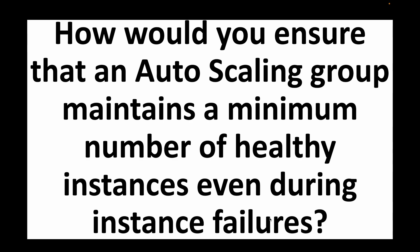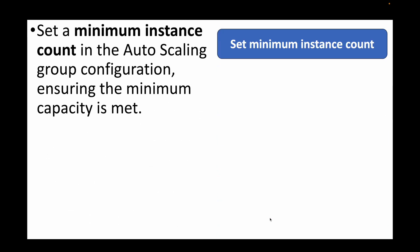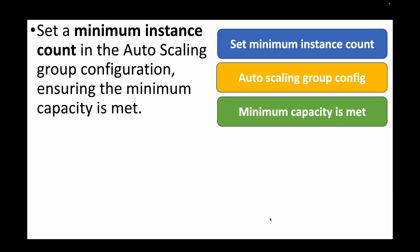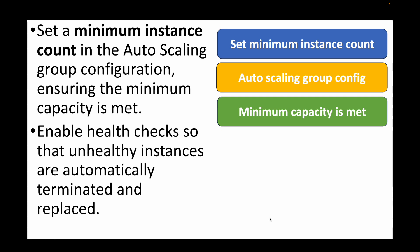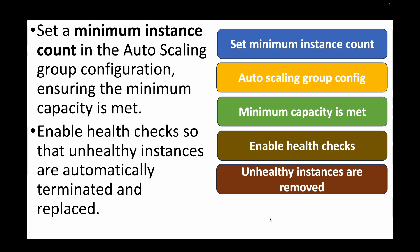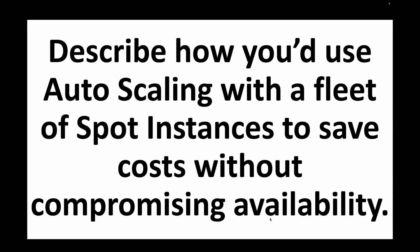The next question: how would you ensure that an auto scaling group maintains a minimum number of healthy instances even during instance failures? For this we set a minimum instance count in the auto scaling group configuration so it always maintains that minimum capacity — for example, three instances at all times. We also enable health checks so that unhealthy instances are automatically terminated and replaced with new instances.